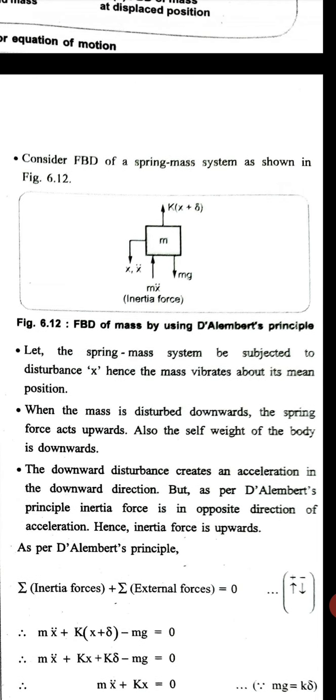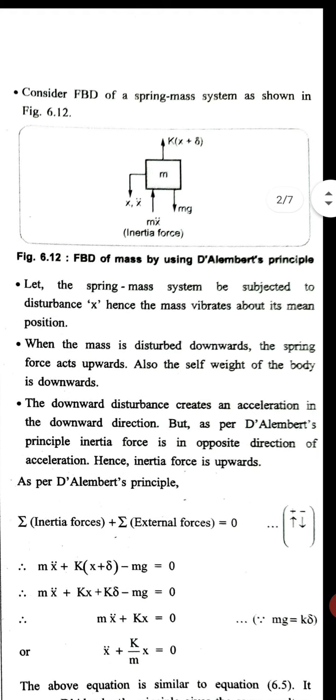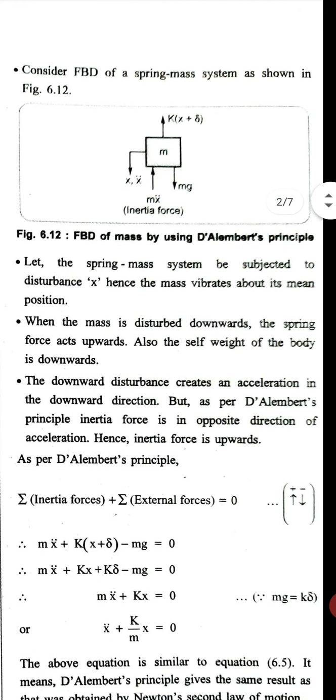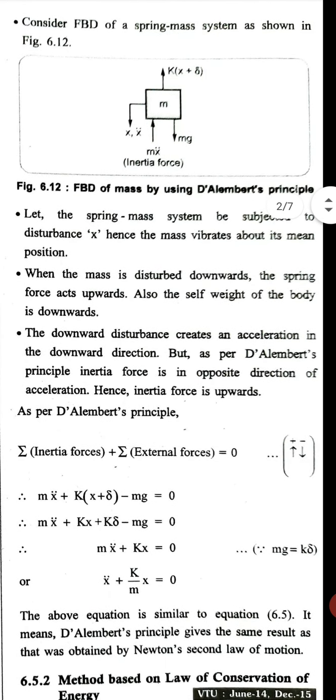Here mx double dot is in the opposite direction, mg is in the downward direction, and k delta is in the upward direction. By D'Alembert's principle, sum of inertia forces should be zero. mx double dot is the inertia force, kx plus delta is the spring force, and mg is the external force.